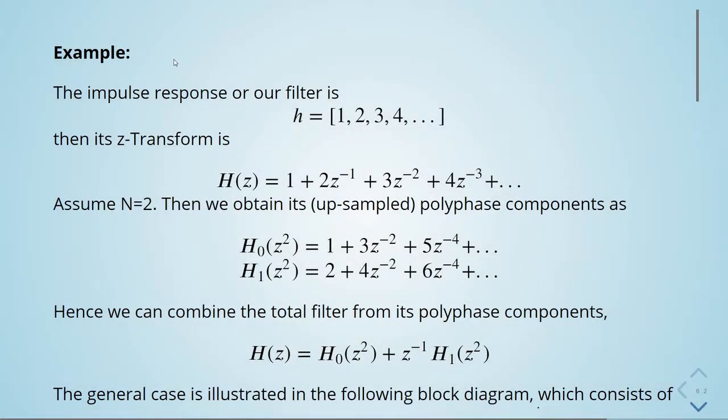Here we have an example. The impulse response of our filter is given by this vector h = [1, 2, 3, 4, ...]. Its z-transform is 1 + 2z^(-1) + 3z^(-2) + 4z^(-3) and so on.